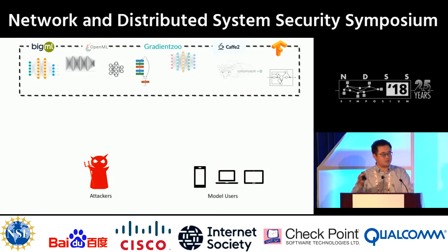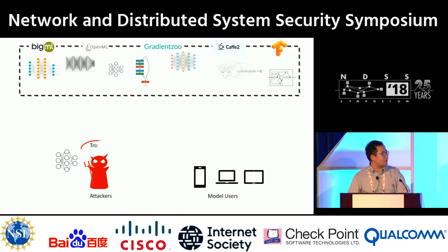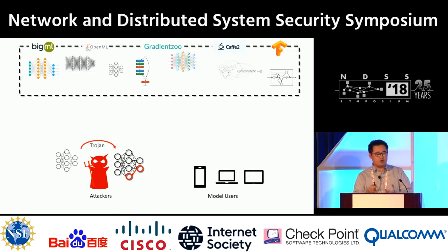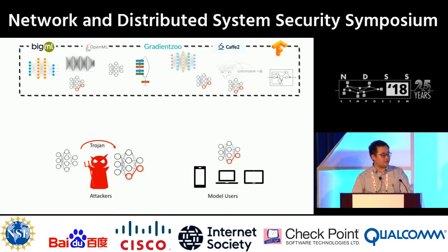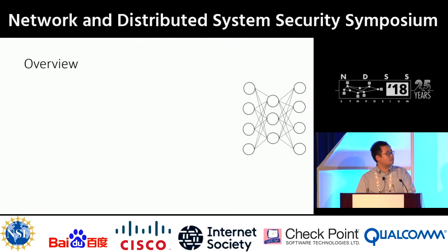I'm going to show you how our backdoor attack works in the model sharing environment. The attacker can simply download a model from the model sharing market. Without access to training data or the training phase, he can still efficiently backdoor it. Because our backdoor attack is much more efficient than training from scratch, he can train many such models and flood the market, or use other ways to lure users to download it. Once the user downloads and deploys it, the attacker can provide input with the backdoor trigger and be recognized as anyone he wants.